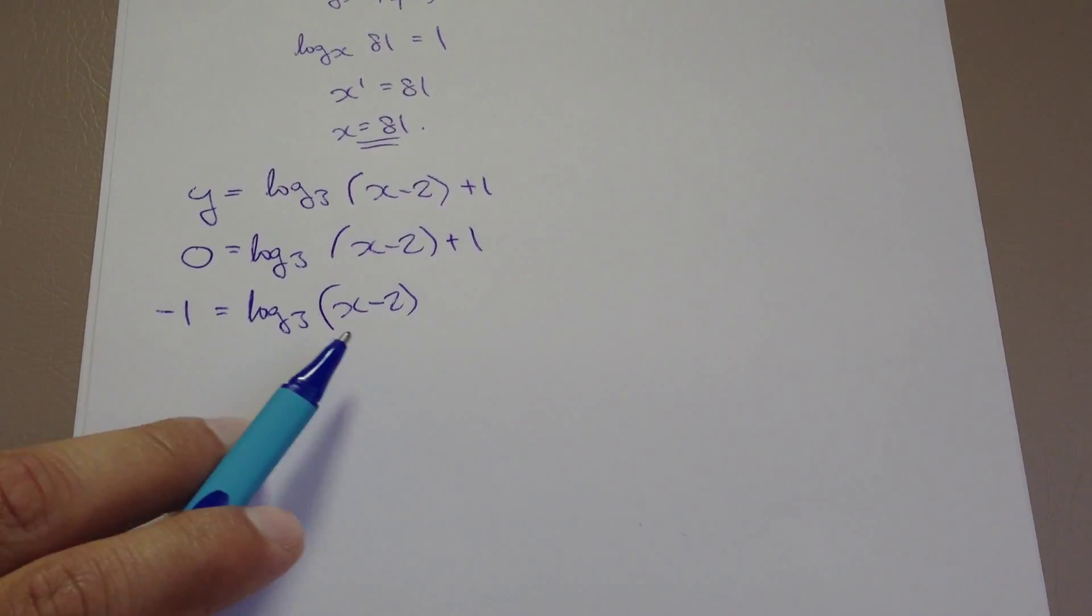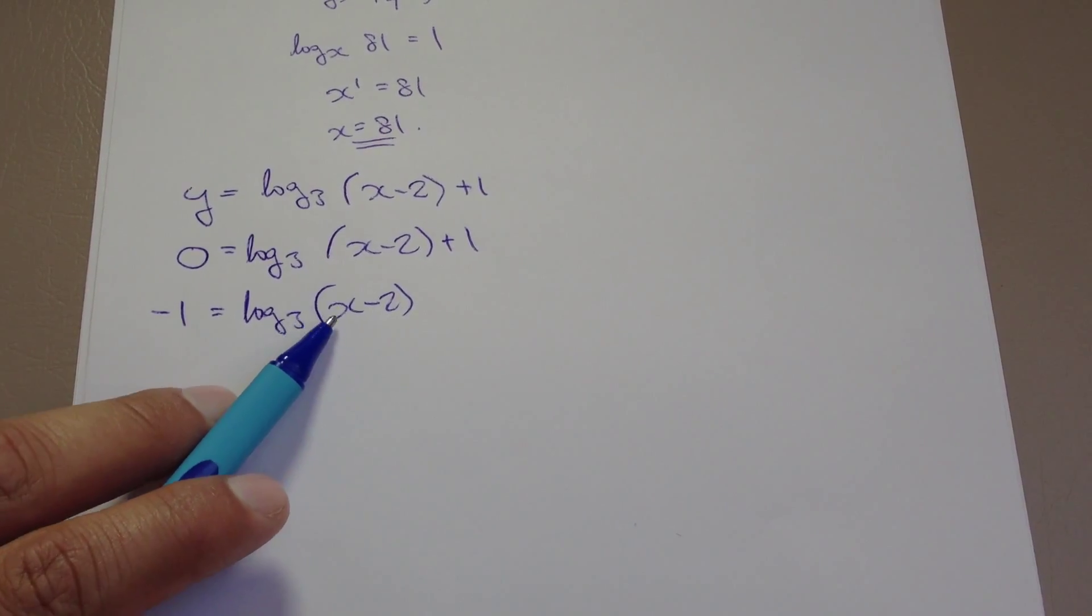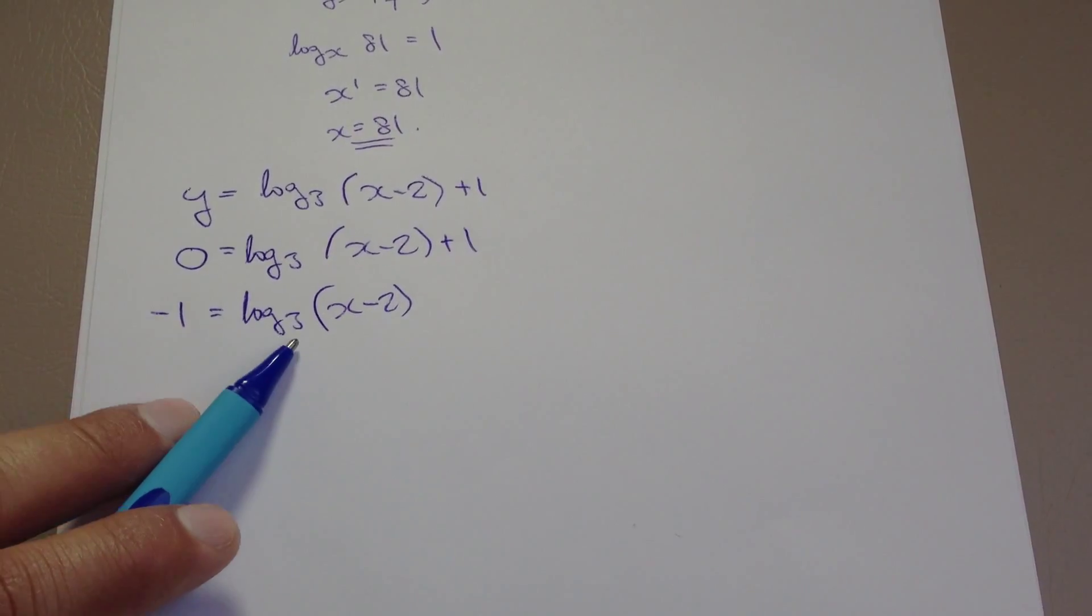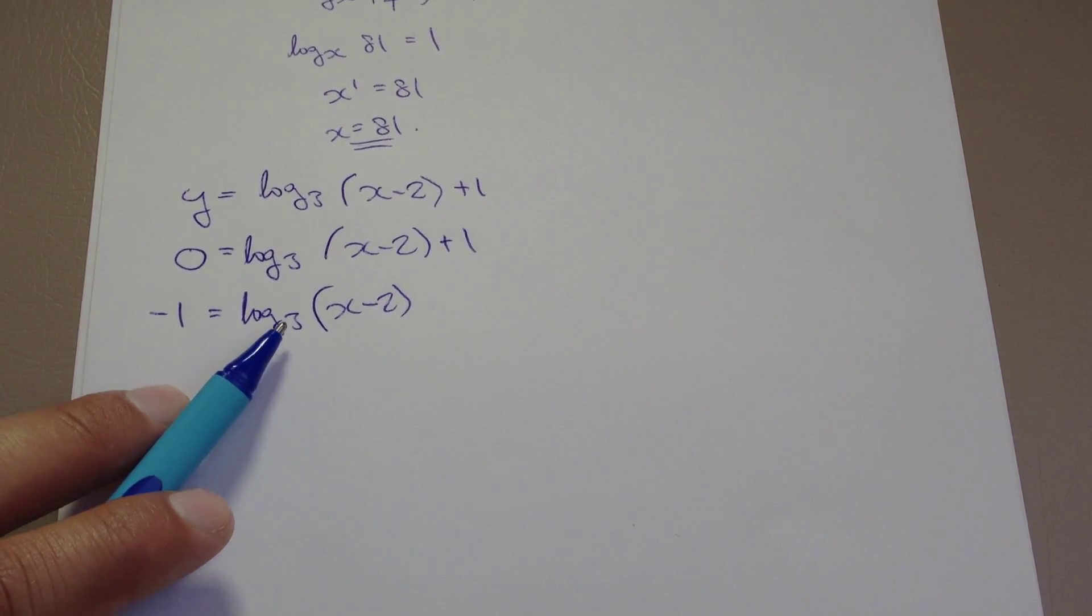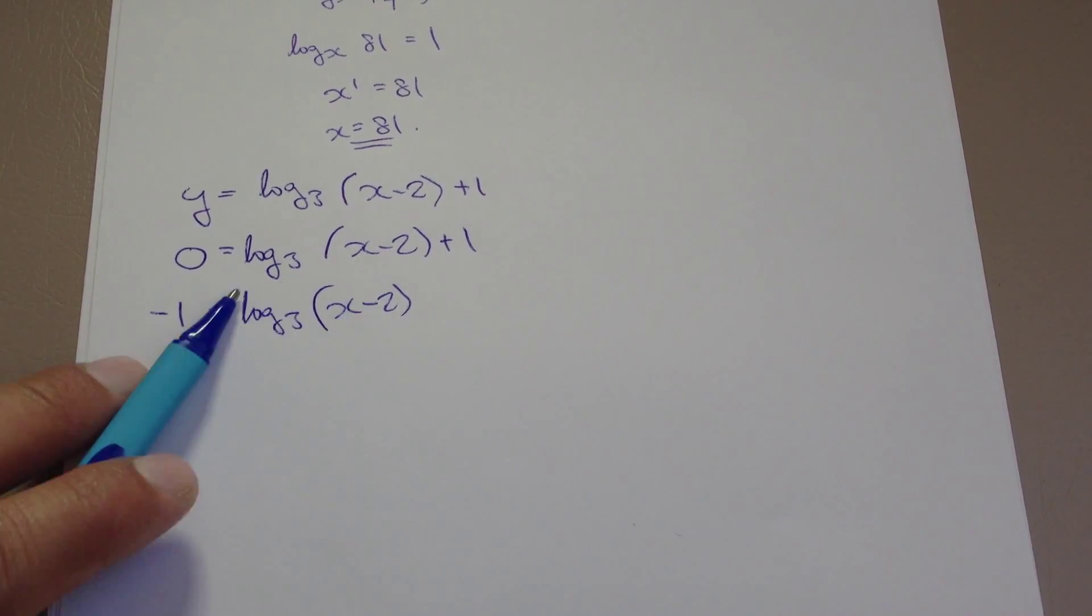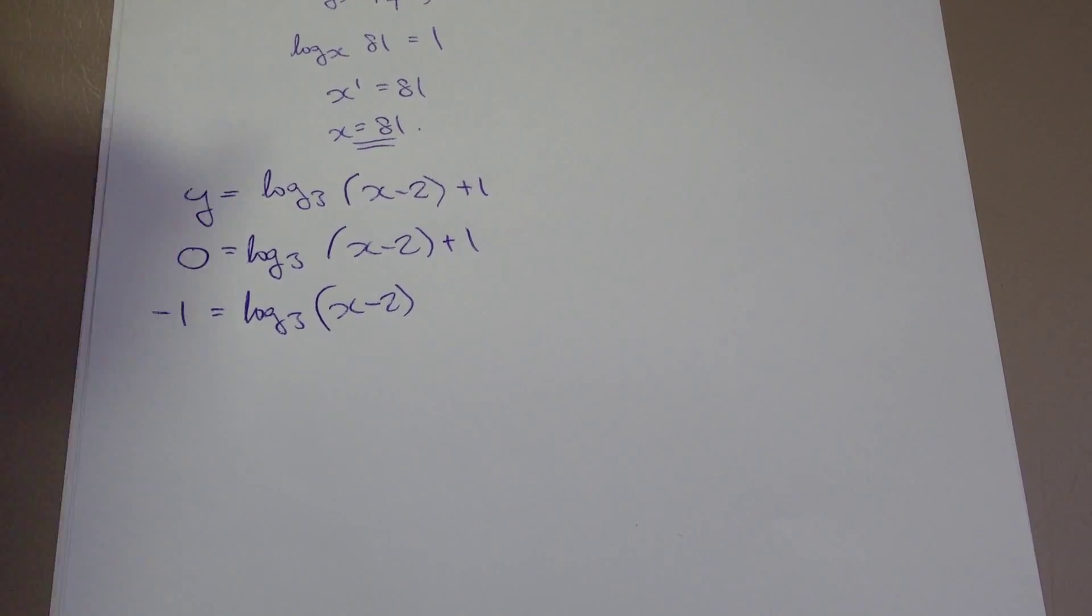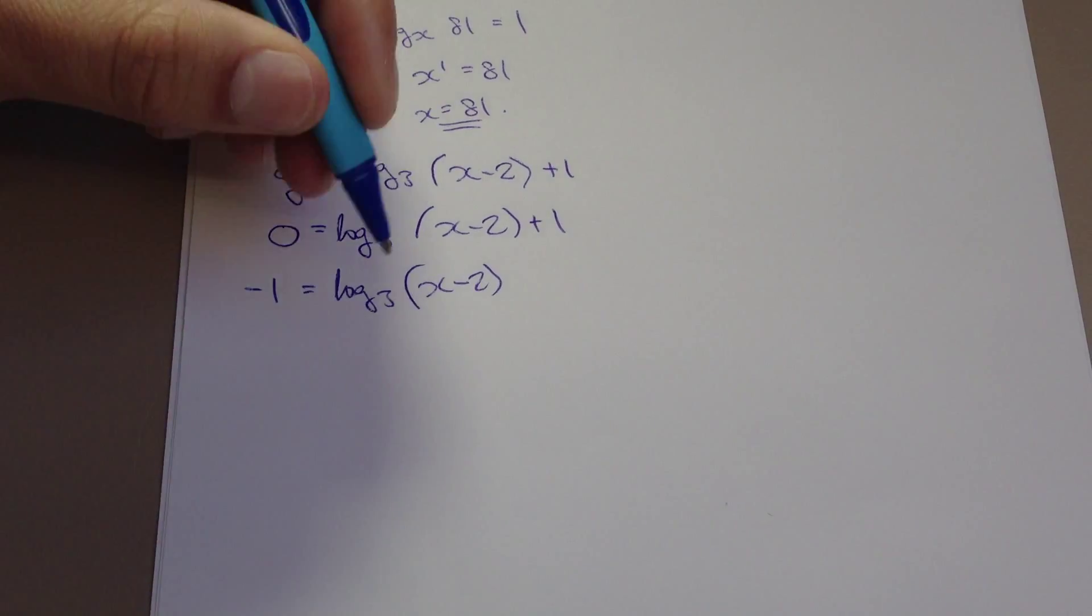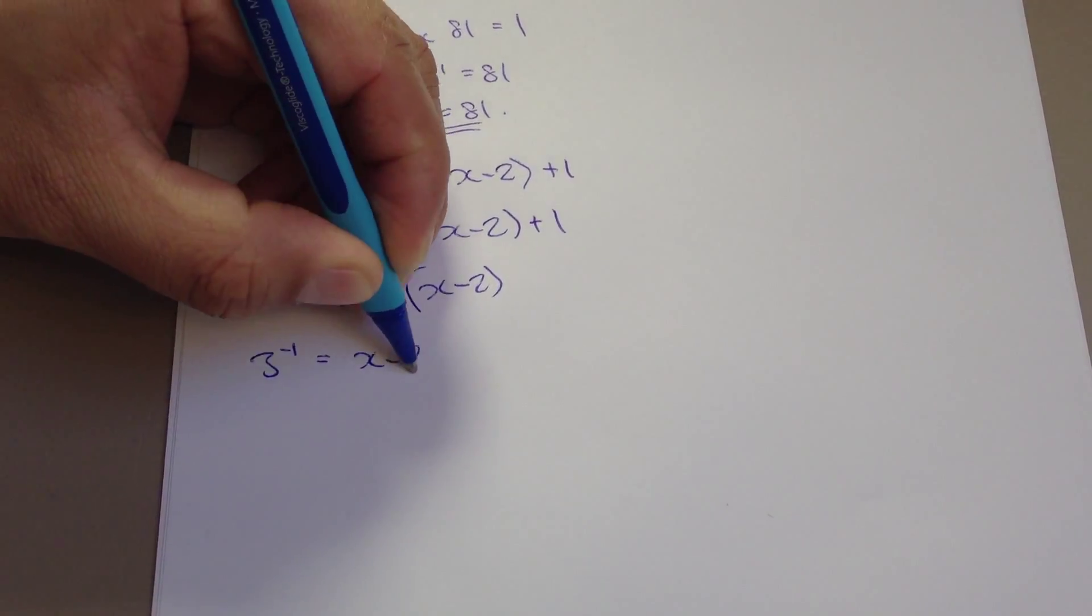A lot of people get to this stage and aren't sure what to do because you can't exactly pop that into the calculator. The x is inside the bracket with a logarithm outside with a base that people aren't usually comfortable with seeing. It's very simple - we just rewrite it as 3 to the power of negative 1 equals x take away 2. That's an easy way to get rid of the logarithm itself.